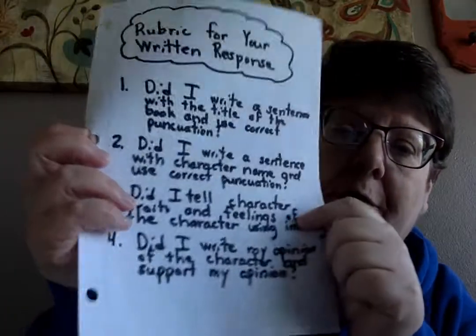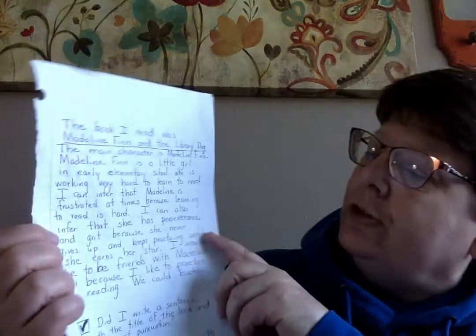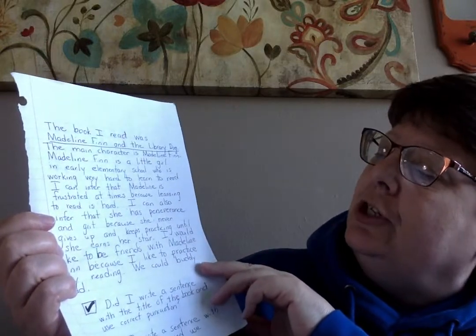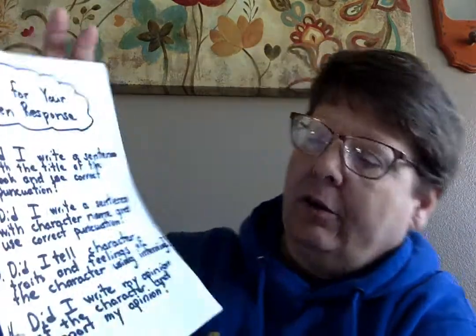The third part of the rubric asks: did I tell character traits and feelings of the character using inferring? I wrote, 'Madeline Finn is a little girl in early elementary school who is learning to read.' And I wrote, 'I can infer that Madeline is frustrated at times because learning to read is hard.' I also inferred that she has perseverance and keeps practicing until she can earn a star. So I can mark that off on my rubric now.